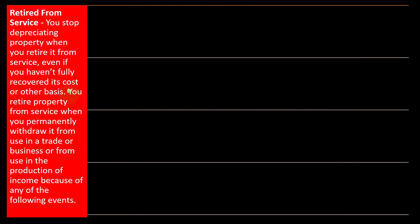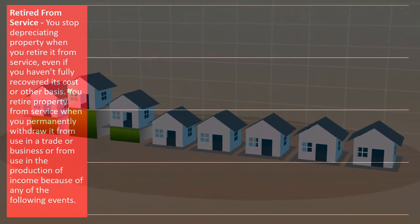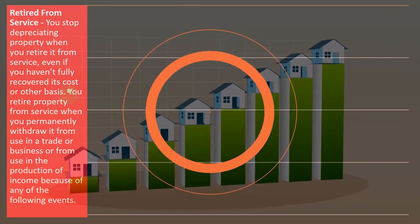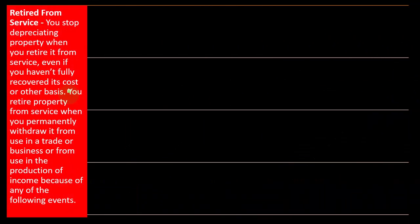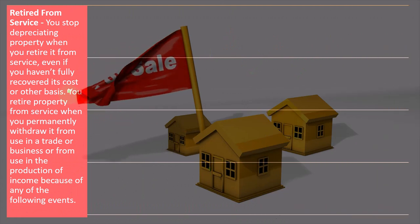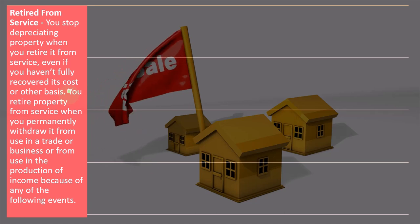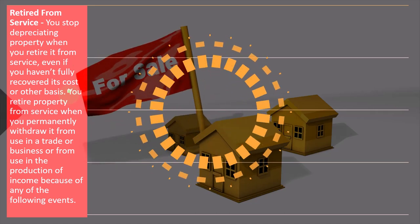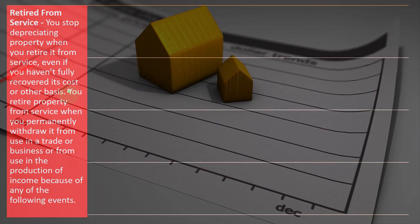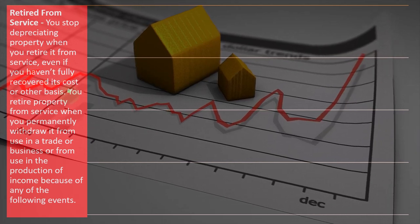Say you have a $100,000 building that still has an adjusted basis — you've only depreciated $60,000, so it still has $40,000 of undepreciated cost. When you retire it — by selling it or converting to personal use — if it was a sale, you calculate the gain as the sales price minus the adjusted basis that hasn't been depreciated. The lower the gain, the better for taxes, and a loss is actually good for taxes.